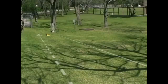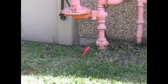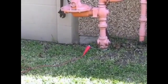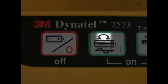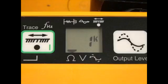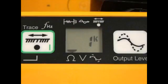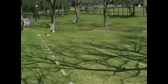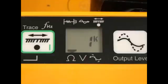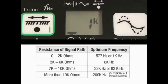Using the direct connect method allows you to determine the quality of the signal path circuit. This information can help you choose the best frequency to apply to the target conductor. Connect the transmitter to the target conductor and measure the quality of the signal path circuit by pressing the OHM key on the transmitter. A flag will appear in the lower left side of the display, indicating that the transmitter is in ohms mode. The resistance of the tracing circuit will be displayed. Based on the quality or resistance of the signal path, you can choose the optimum frequency for your application, using a reference chart.